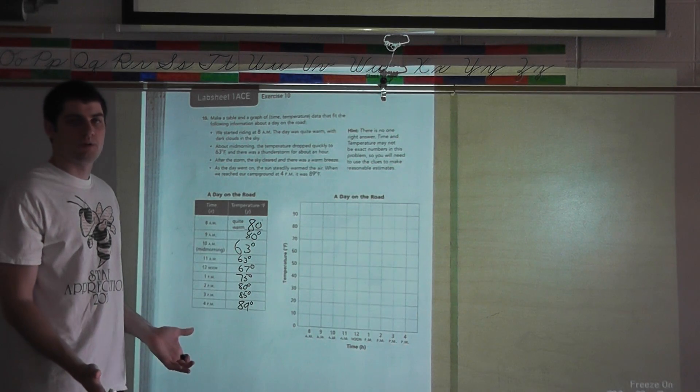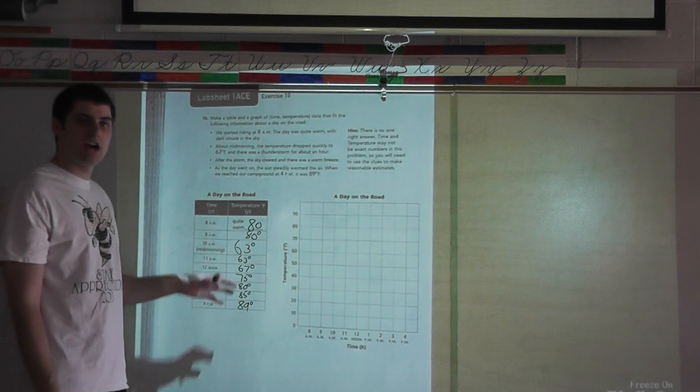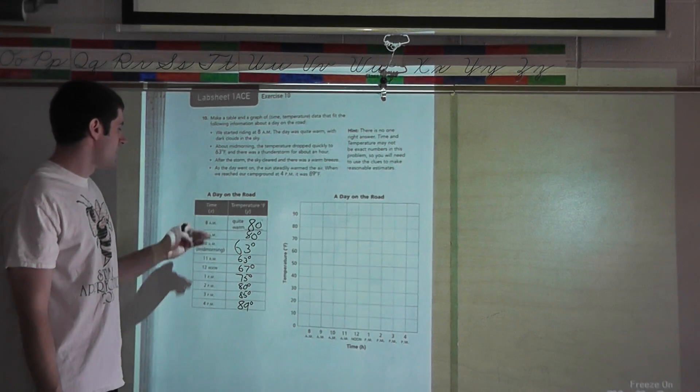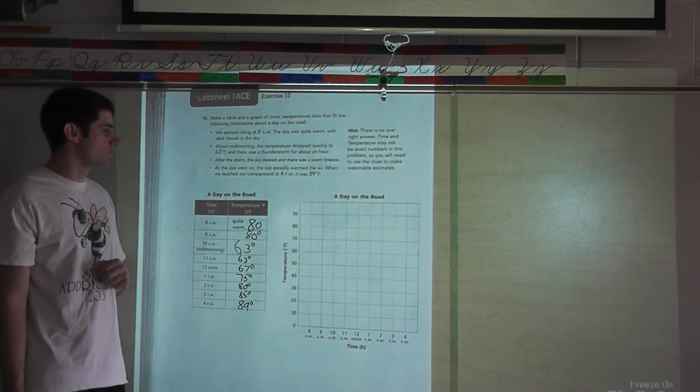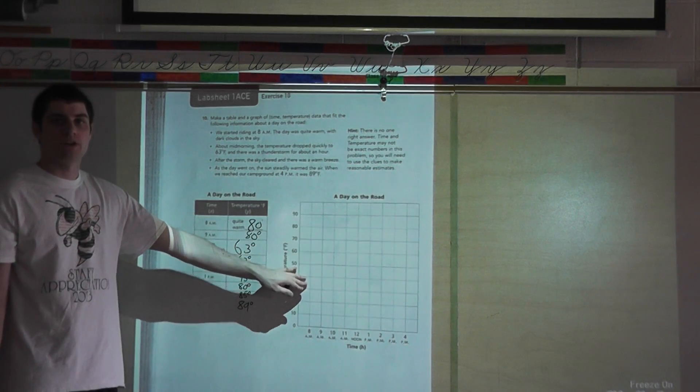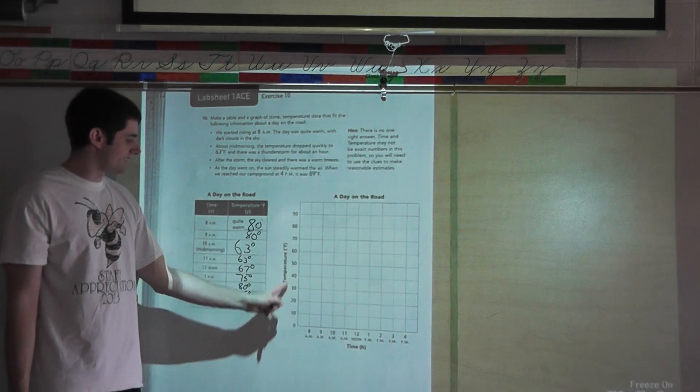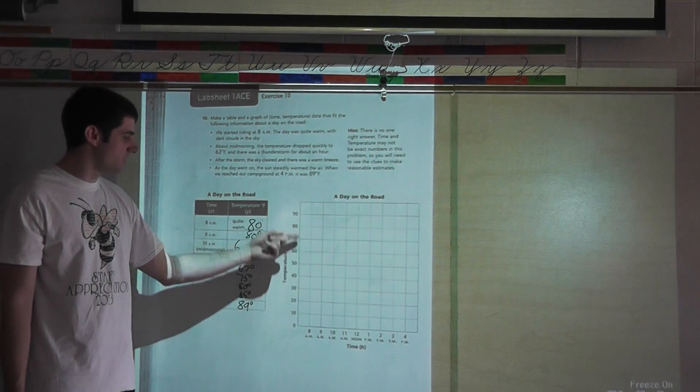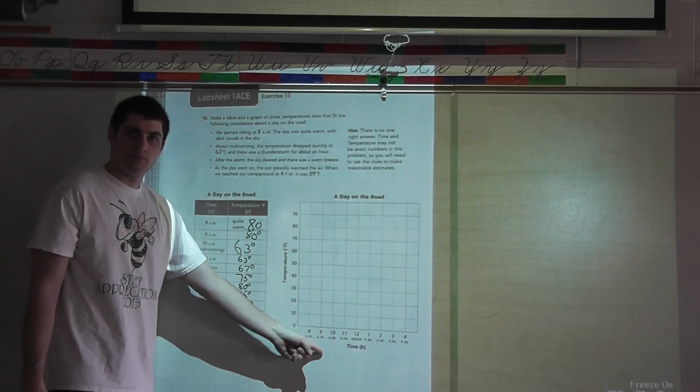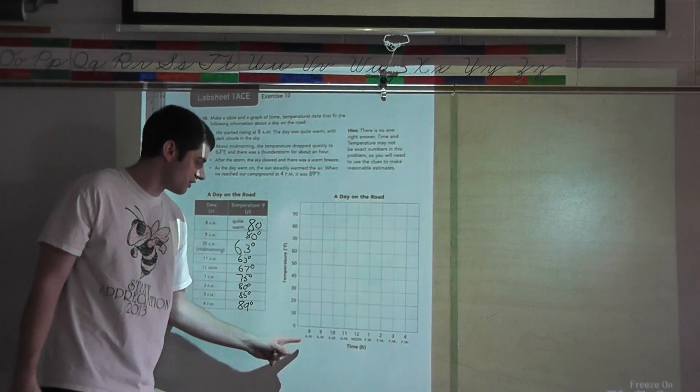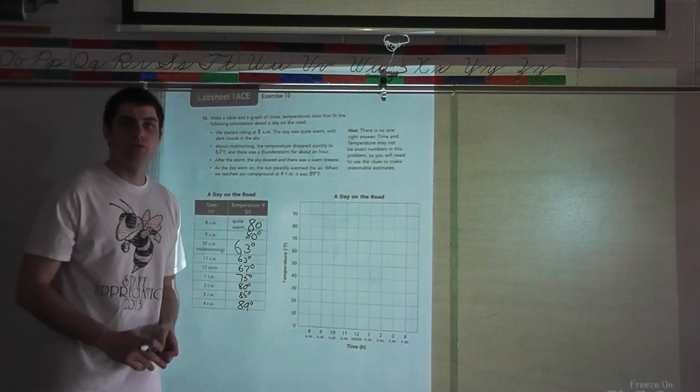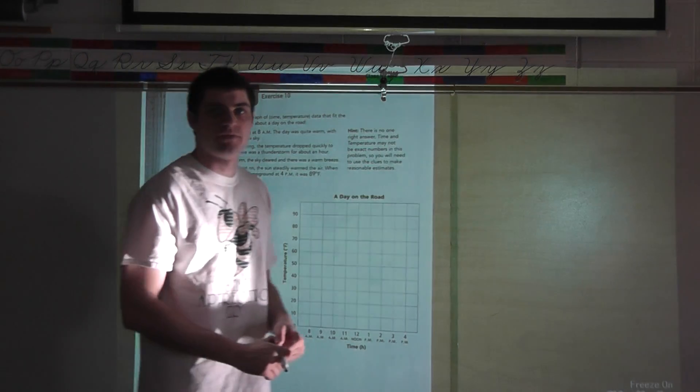Again, these numbers are not exact. You may have different numbers, but this is a reasonable estimate as I work through my table. Well, I did all the hard part now. Got my information down. I have my time. I have my temperature here. Those are the two data points that we're looking at. Then I look at my graph here. The graph needs to have a title.